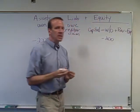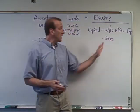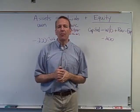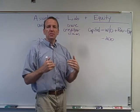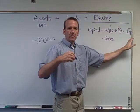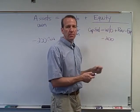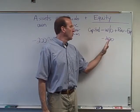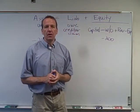Revenue increases our equity and expenses decrease our equity. Revenue is the money we earn from whatever our business does - in our case selling pizza, salads, and wings. Expenses are things we pay out: gas for the car, utilities, wages to employees. These reduce the profit of the business. Revenues increase our profit, expenses decrease our profit. So equity has four parts: capital what the owner contributes, withdrawals when the owner takes money out, revenues earned, and expenses paid.